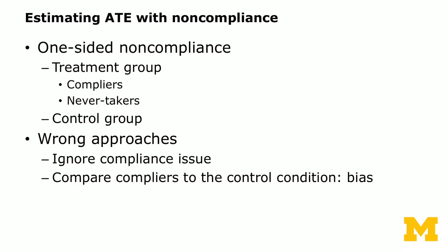A big question is how we estimate the average treatment effect with noncompliance. The wrong approach — which is often seen in published literature — is to simply ignore the compliance issue and compare compliers to the control condition. When the treatment group consists of compliers and never-takers, you only observe compliers' actions and ignore never-takers. Ignoring the fact that some people toss their letters or never open emails and just comparing those who are treated to the control group would cause biased estimates of the average treatment effect.